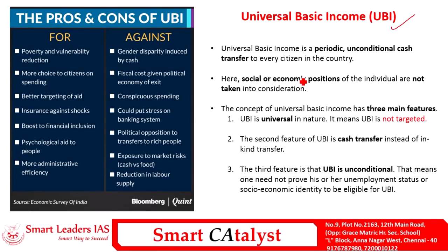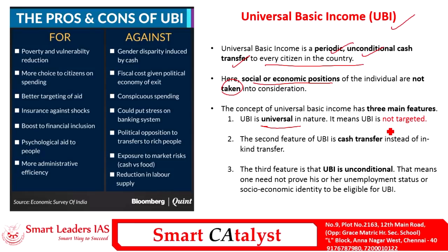What is universal basic income? UBI is a periodic, unconditional cash transfer to every citizen in the country. During the provision of UBI, the social or economic positions of individuals are not considered by the state — every citizen is considered equal and provided with an unconditional cash transfer. This concept has three important features. The first is that it is universal in nature and not targeted, unlike the targeted Public Distribution System.